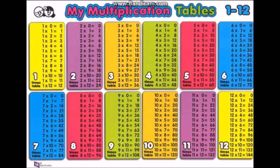7 x 0 is 0, 7 x 1 is 7, 7 x 2 is 14, 7 x 3 is 21, 7 x 4 is 28, 7 x 5 is 35, 7 x 6 is 42, 7 x 7 is 49, 7 x 8 is 56, 7 x 9 is 63, 7 x 10 is 70, 7 x 11 is 77, 7 x 12 is 84.